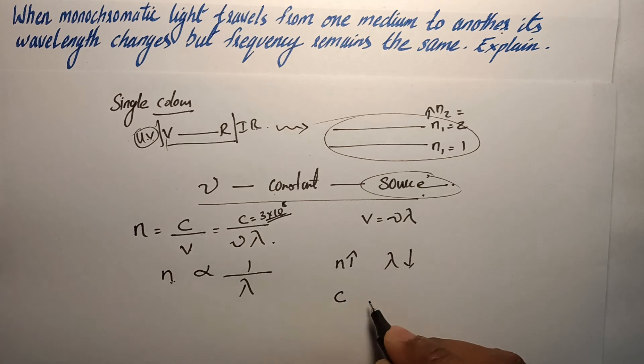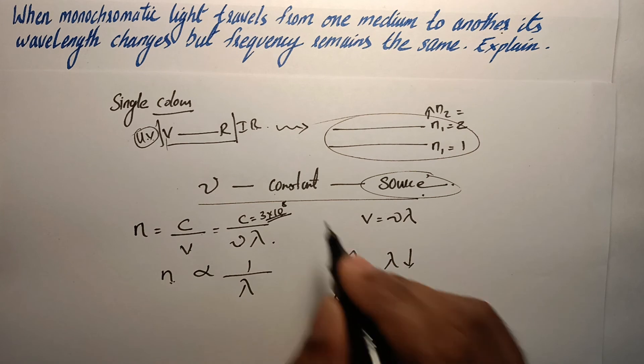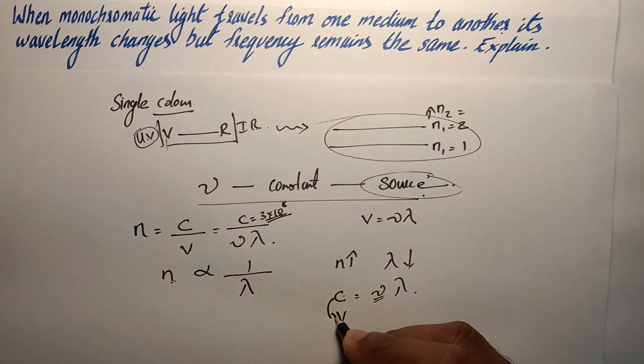Also, we can say that the velocity of light in a medium is the product of frequency and wavelength. We already said that frequency is constant. So whenever c changes, the wavelength has to change from one value to another.